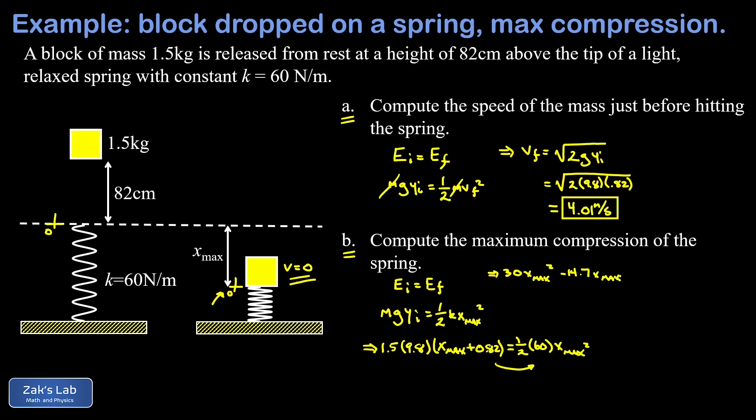And then we have our constant term, 1.5 times 9.8 times 0.82, and subtract that over to the right hand side, and that gives me negative 12.05. All right, so all of that is equal to zero.